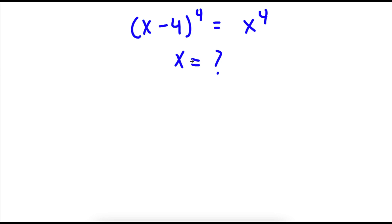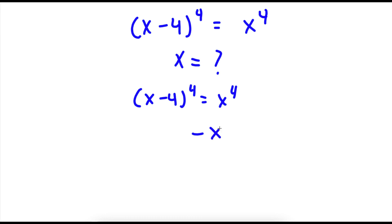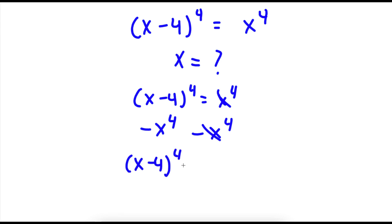The first thing I'm going to do from my equation — x minus 4 to the power of 4 is equal to x to the power of 4 — is I'm going to subtract both sides by x to the power of 4. So then these two will cancel out and I will be left with x minus 4 to the power of 4, minus x to the power of 4, is equal to zero.